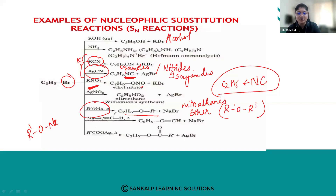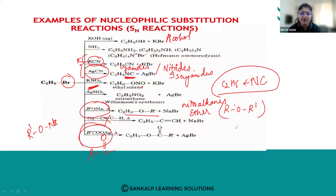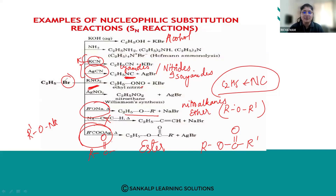The last example: when you have the substituted product in the form of an ester — which has the O–C=O–R linkage — that is your ester. So these are the different reagents from which different nucleophiles can be generated to carry out nucleophilic substitution reactions.